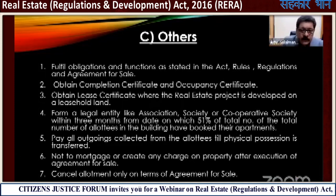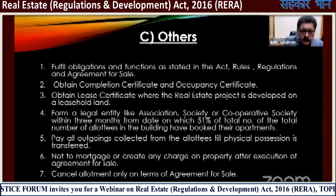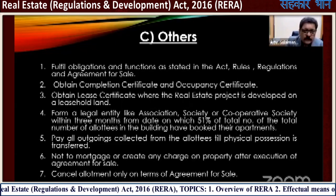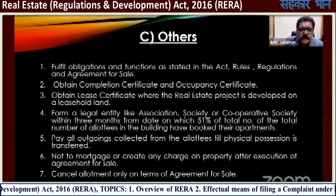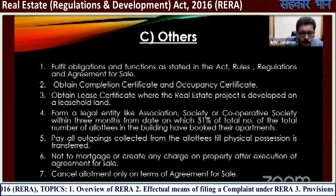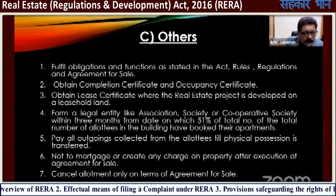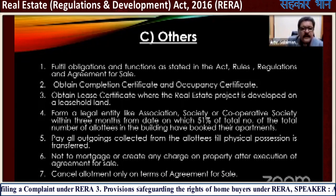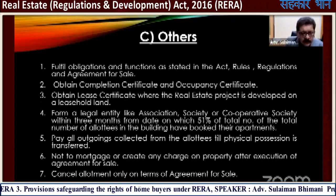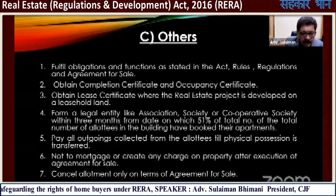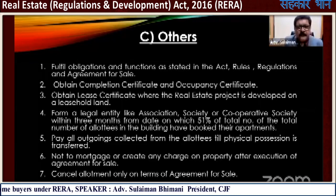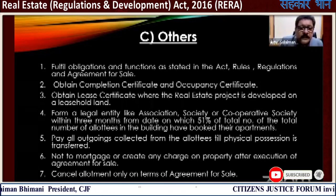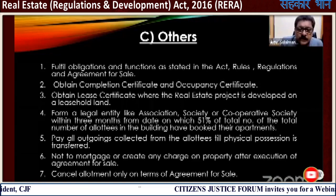This is very important — the moment the builder books more than 51% of the total number of units, not even the registered agreement, he has to form a society or an association of allottees. Normally, even after 20 or 30 years, builders have not conveyed the land or formed the society. With this clause, even if the building is half complete and 51% of total units are booked, he is bound to form a society or an association of allottees.